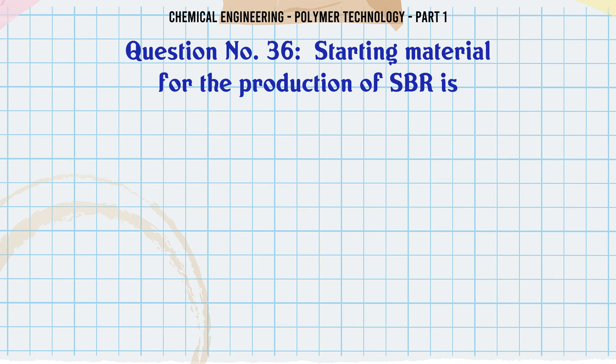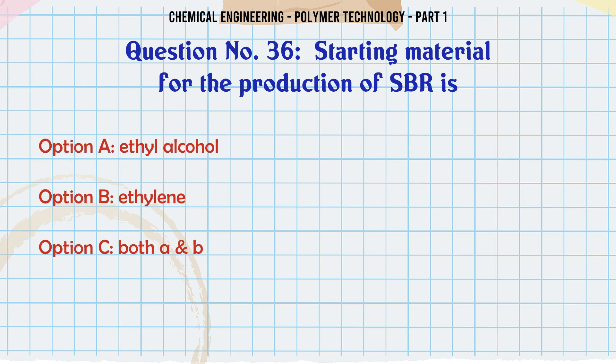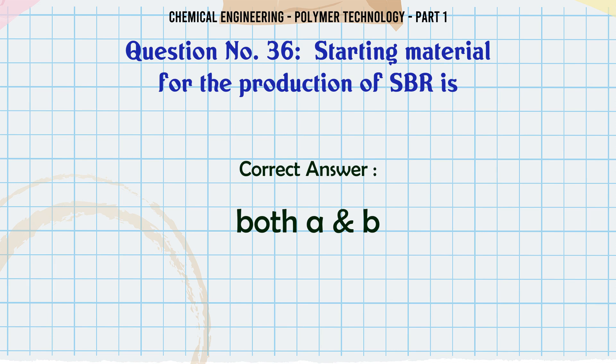Starting material for the production of SBR is: A. Ethyl alcohol, B. Ethylene, C. Both A and B, D. Neither A nor B. The correct answer is Both A and B.